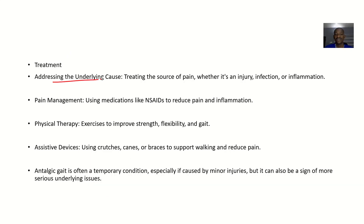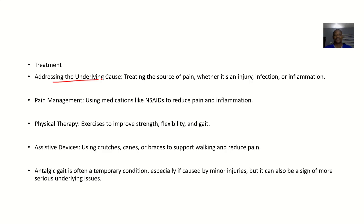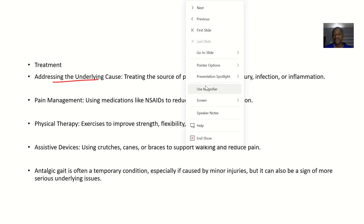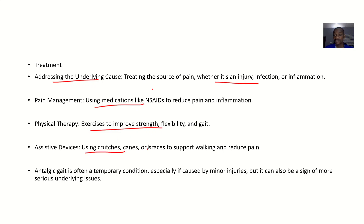Treatment: You address the underlying cause — you treat the source of pain, whether it is an injury, infection, or inflammation. Pain management using medications like non-steroidal anti-inflammatory drugs helps to reduce pain and inflammation. Physical therapy with exercises can improve strength, flexibility, and gait. Assistive devices like crutches, canes, or braces can all help the patient walk.